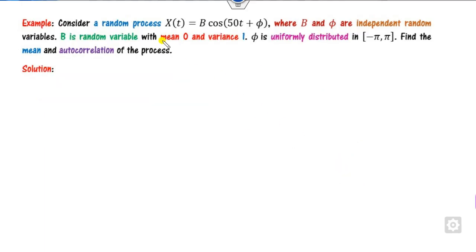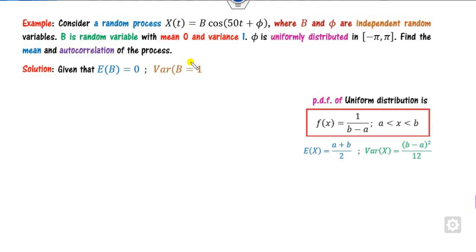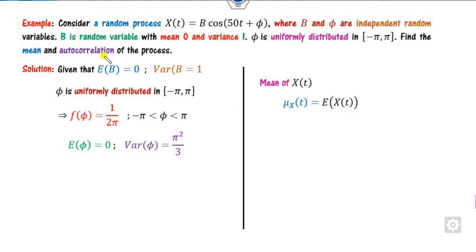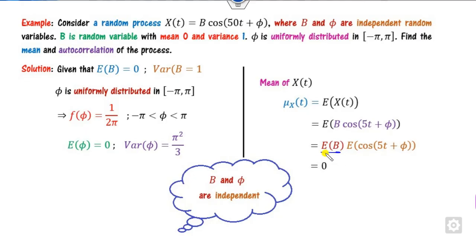Look at the next example. Consider a random process where B and φ are independent with mean 0 and variance 1. φ is given as a uniform distribution over [−π, π], so PDF of φ is 1/(2π). You have to find the mean and the correlation. We start from the mean: substituting the value and using independence of B and φ, E[B] = 0, so the mean is 0.